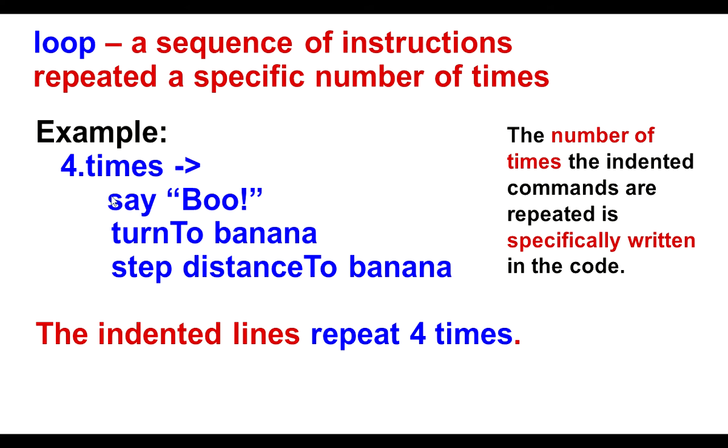So these lines are going to repeat four times. So this type of loop that we learned in Code Monkey. The number of times is specifically written in the code. That's why it's associated with a specific number of times where the iteration is not.